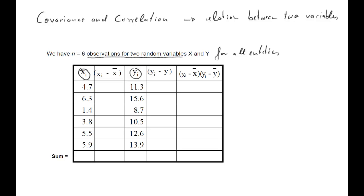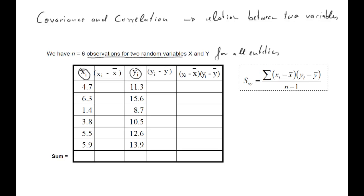Before we complete the table, let's briefly look at the formula to see what we need. The sample covariance — the 's' represents the fact that we have a sample — is Sxy = Σ(xi − x̄)(yi − ȳ) / (n − 1), where n is the sample size.